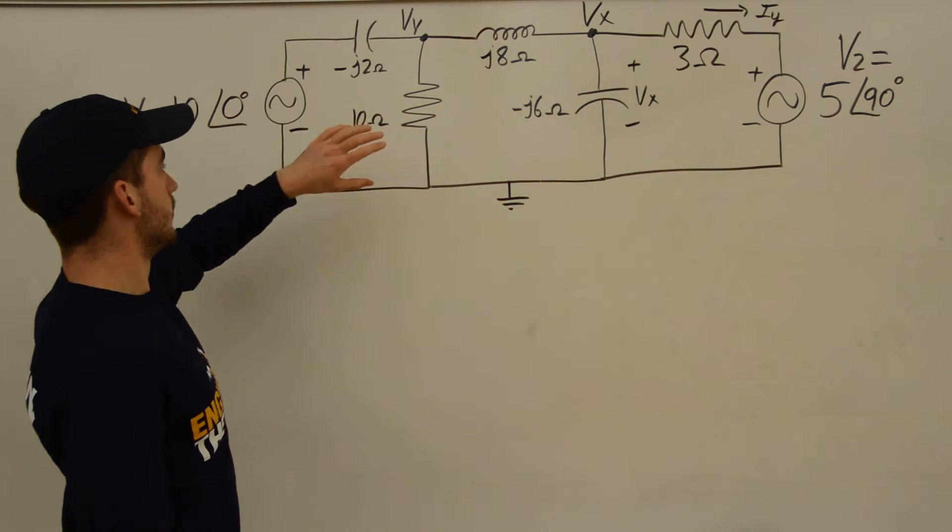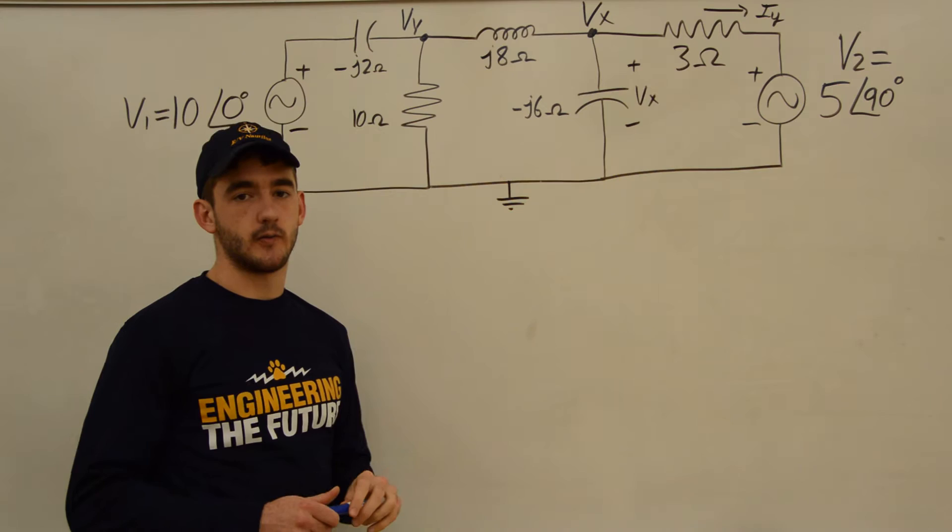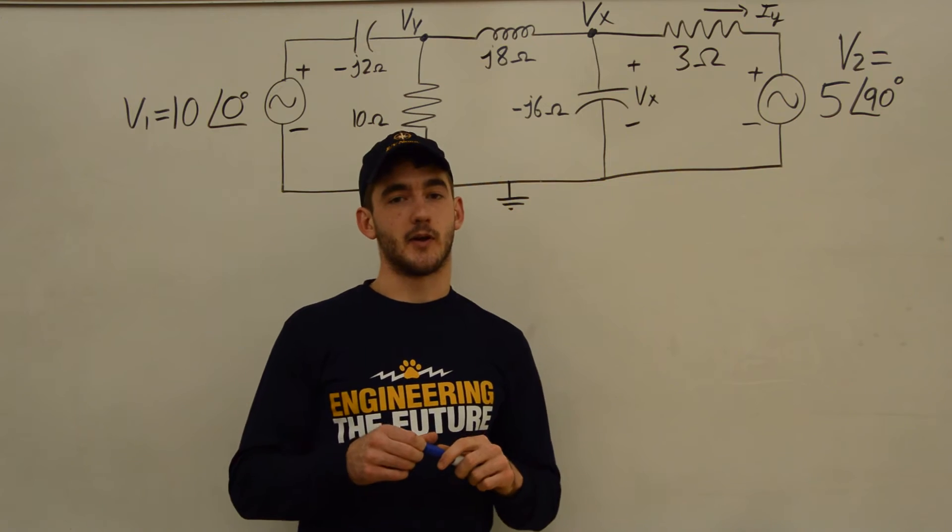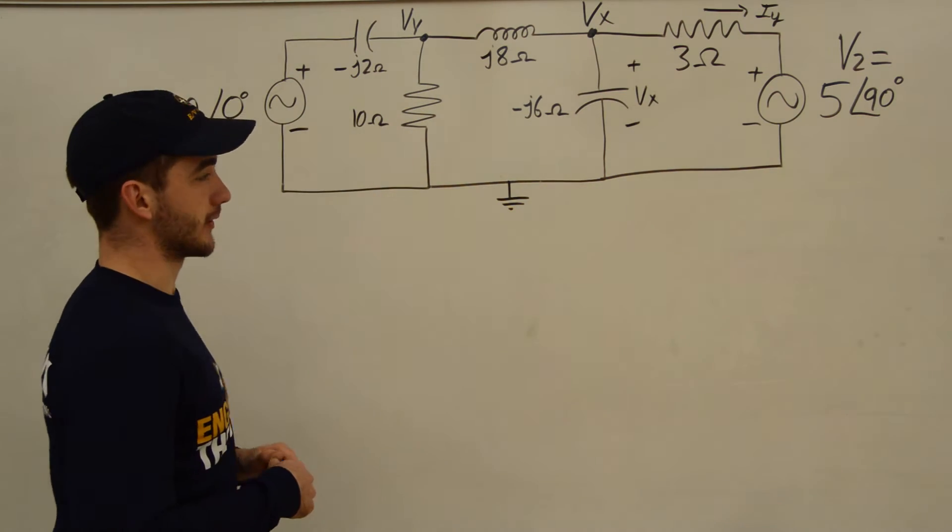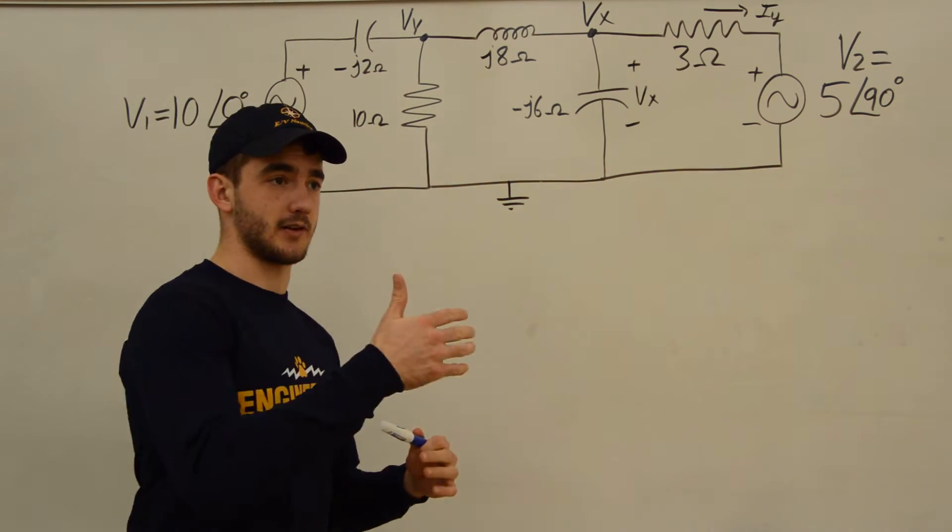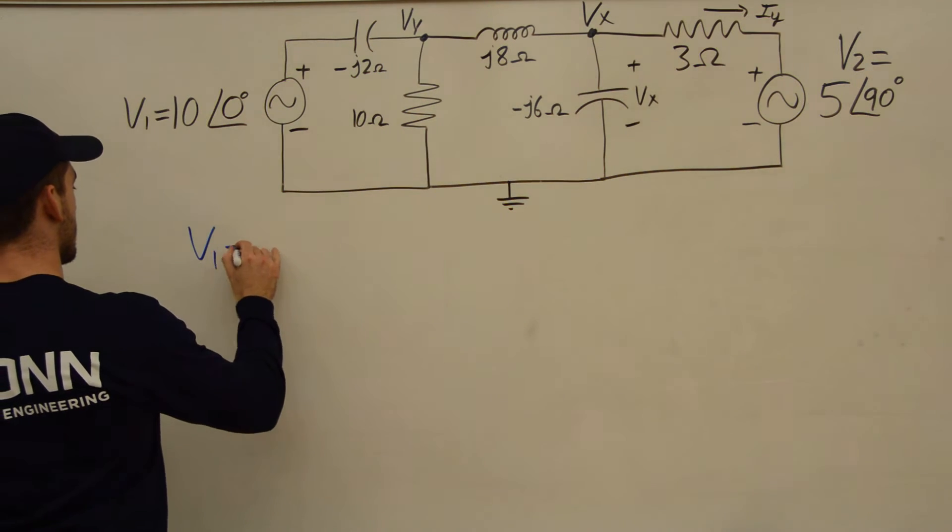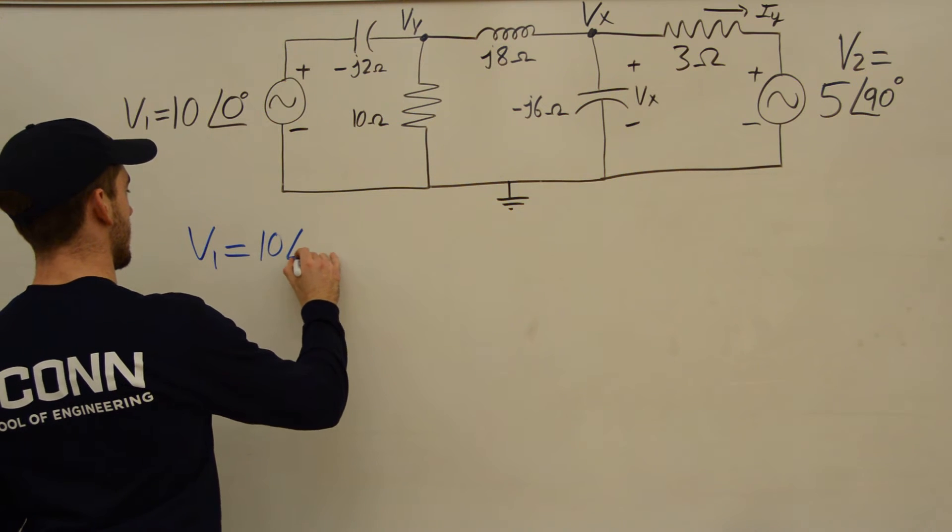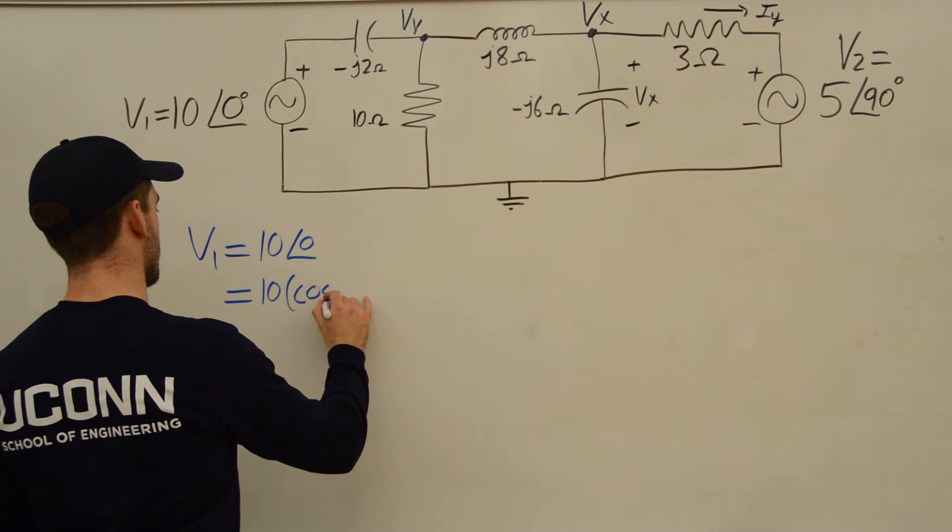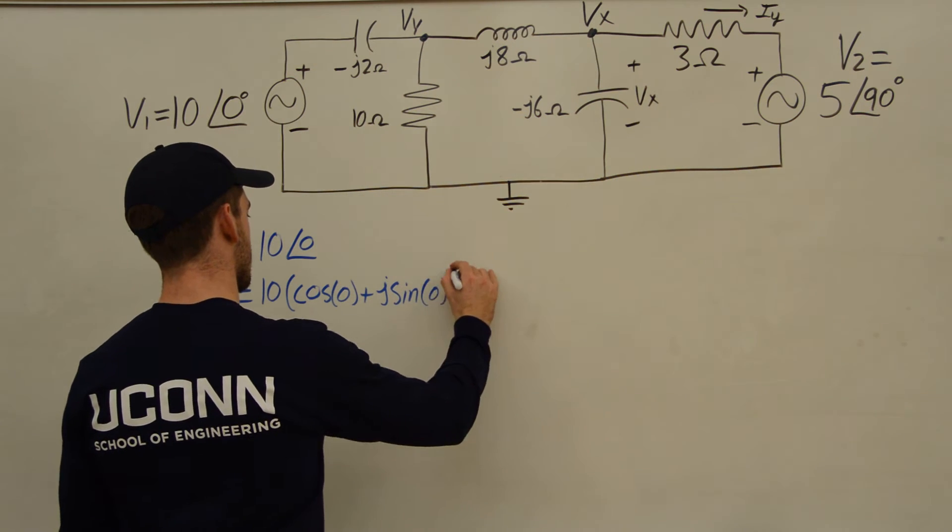So we have two sources, one on the left and one on the right. This is V1, and it's written in polar form right now. So if you just watched our video on polar coordinates to rectangular coordinates, this will be easy. If you need to go watch that, I'd recommend it. Otherwise, we'll start converting these to rectangular form, because it's easier to work with rectangular form mathematically. So always convert them to rectangular form first.